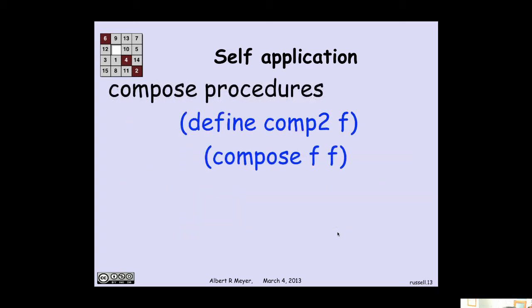OK, well, now let's define a compose it with itself operation. I'm going to call it comp 2. Comp 2 takes one function f, and the definition of comp 2 is compose f with f. And if I then apply comp 2 to square and 3, it's saying, OK, compose square and square. We just did that. That was the fourth power. Apply it to 3, I get 81.